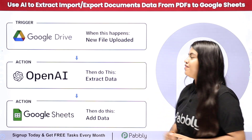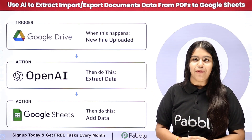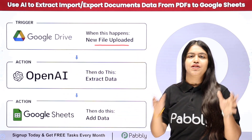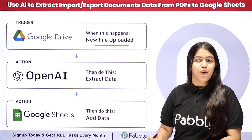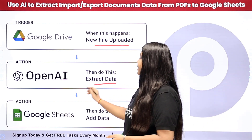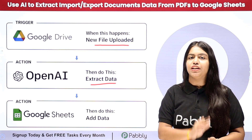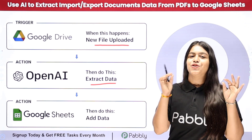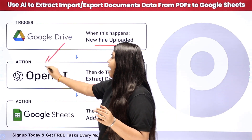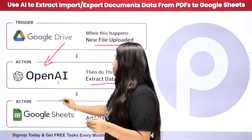To solve this problem I have created an amazing automation. Whenever I add a file in my Google Drive which is the import export document, automatically my AI agent is going to extract the details from that document and add them into Google Sheets — without any manual effort. To do this we are simply going to create a connection between Google Drive, my AI agent which is OpenAI, and then Google Sheets.